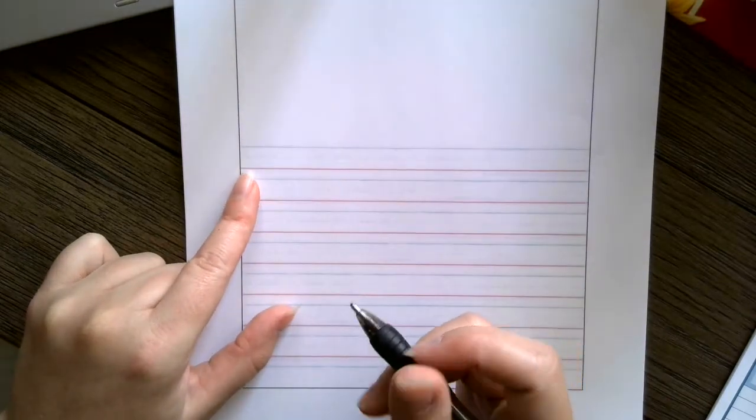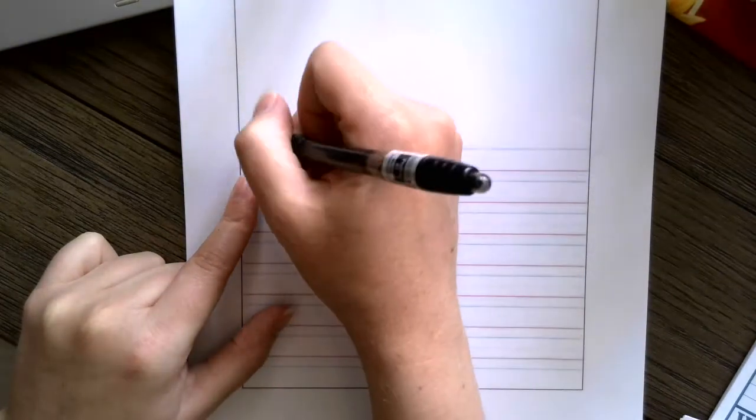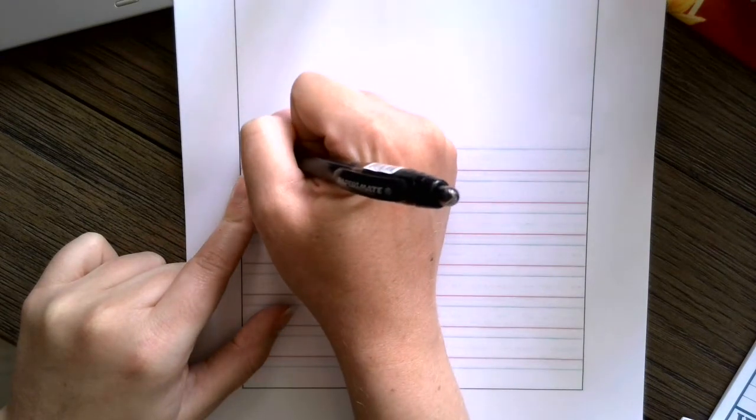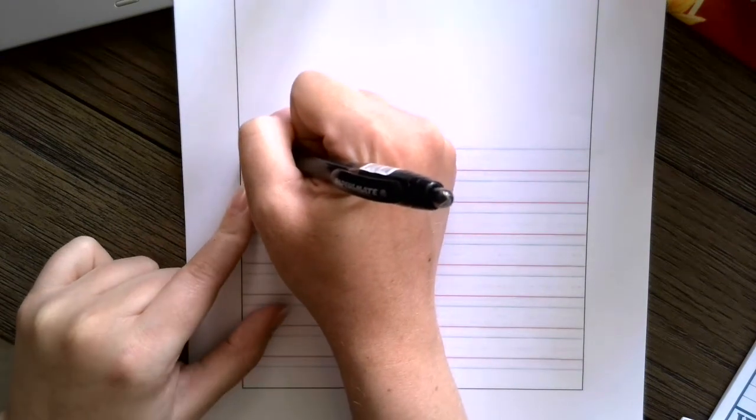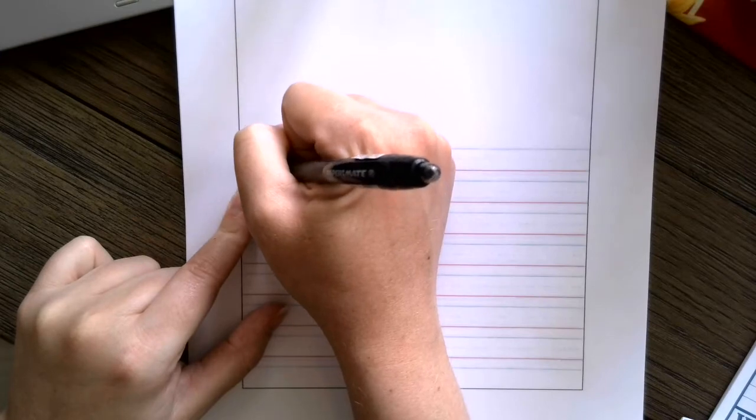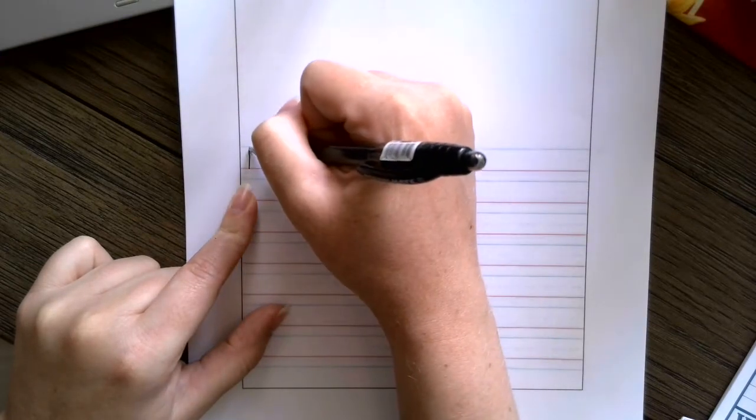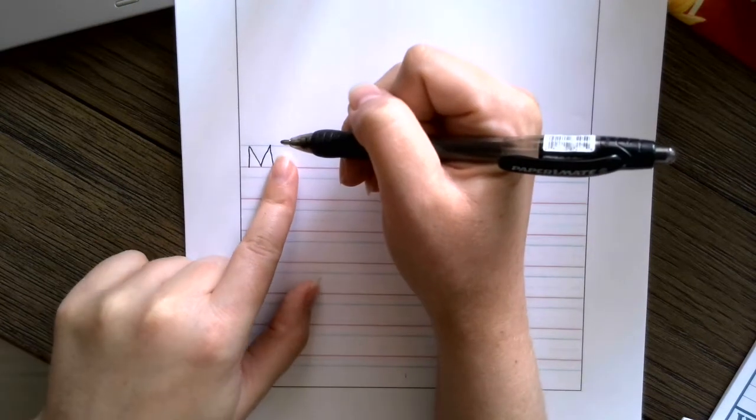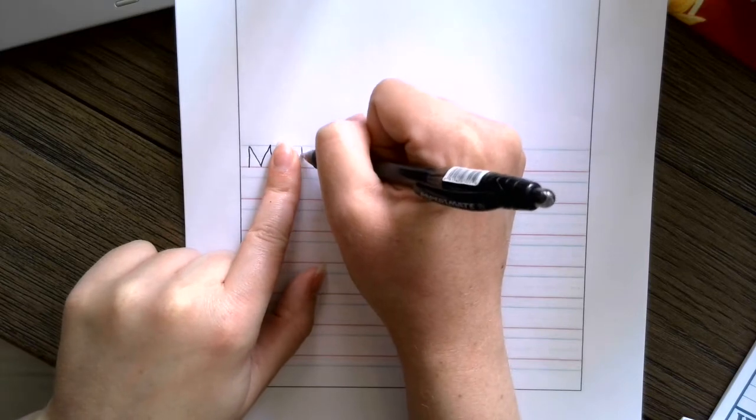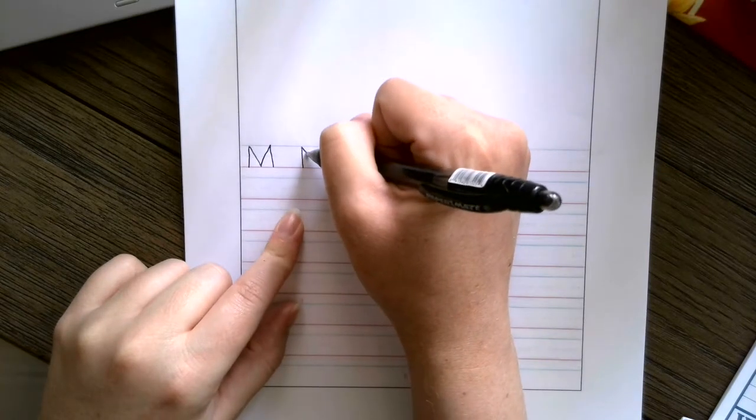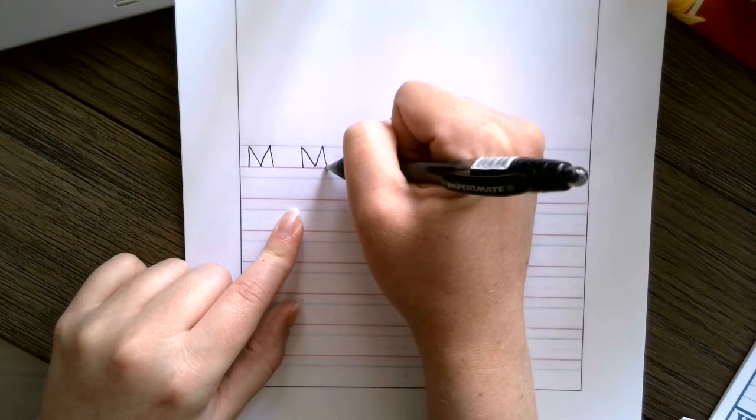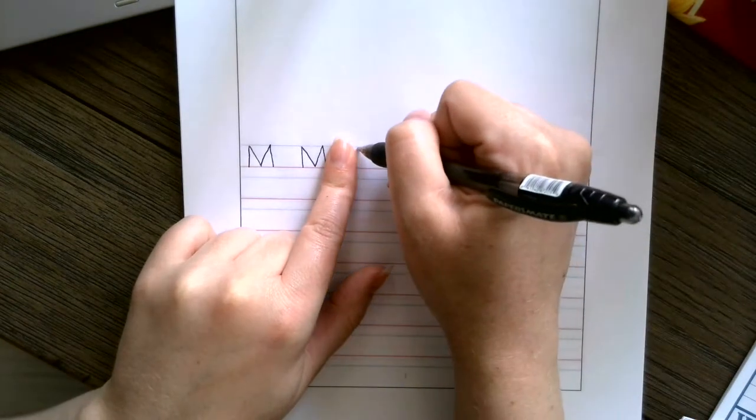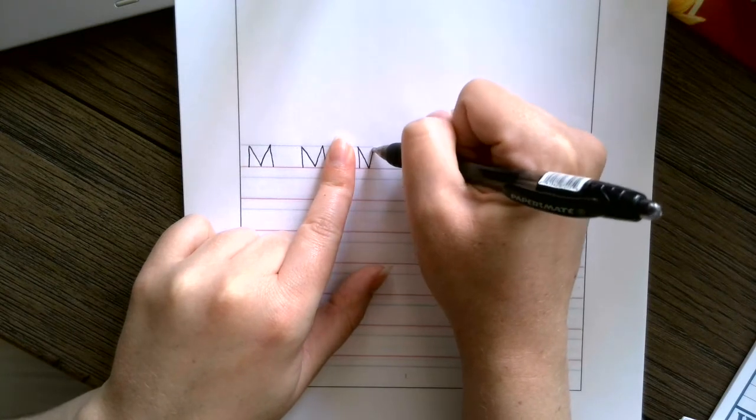Now a couple things to remember when you write: we always start at the top of the letter. The video will instruct you the right way to make each of these letters, but if I was going to do the letter M, I'd start top to bottom, top to bottom, back up and back down. Then I'd leave a space and repeat that. The video will tell you when to write each letter, but it's your job to remember to put the spaces in between.